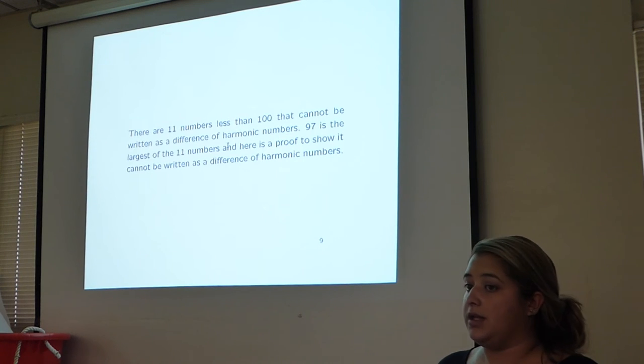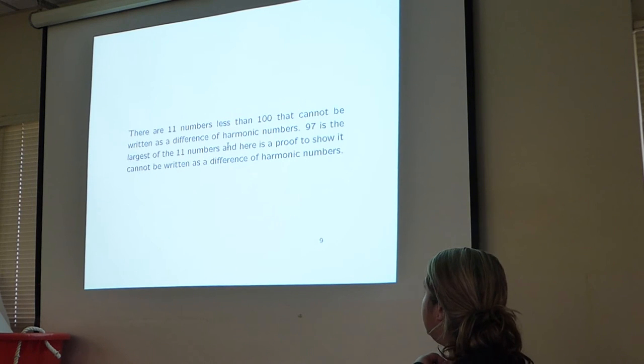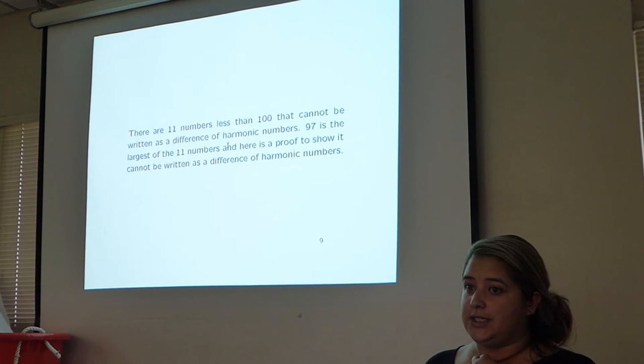We found that there are 11 numbers, less than 100, that cannot be written as a difference of harmonic numbers. 97 is actually the largest of these numbers.